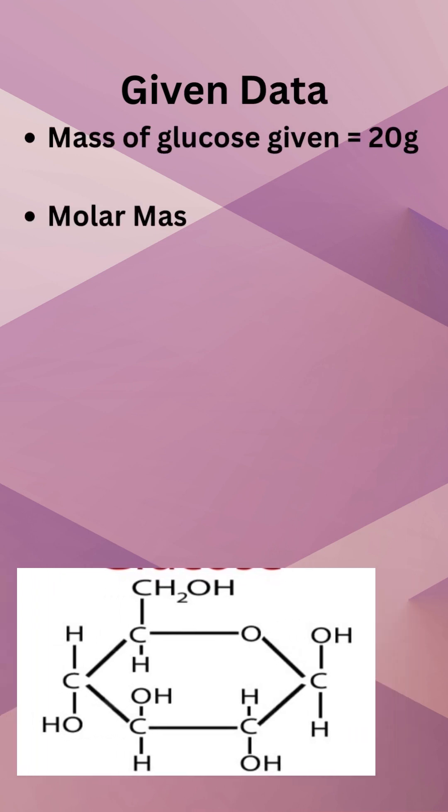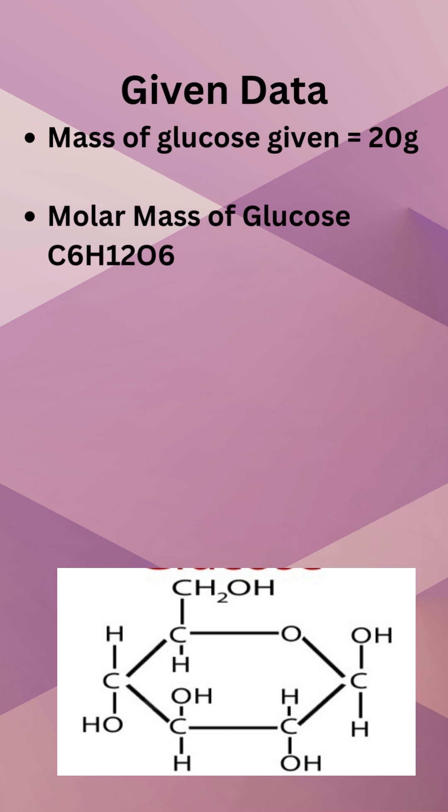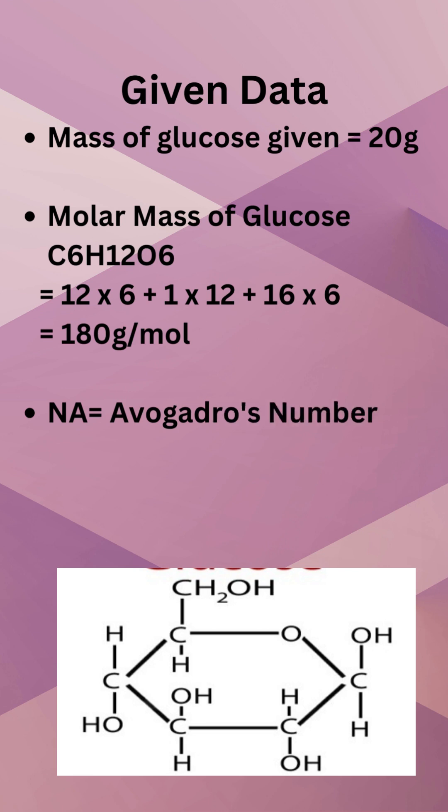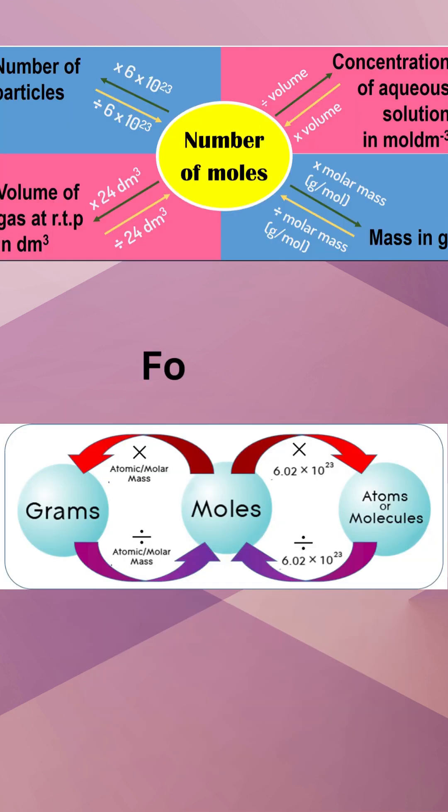Molar mass of glucose C6H12O6 is 12 into 6 for carbon plus 1 into 12 for hydrogen plus 16 into 6 for oxygen, equal to 180 gram per mole. Avogadro's number: 6.02 into 10 to the power of 23.